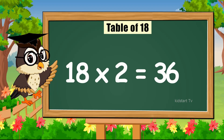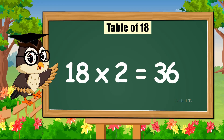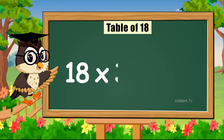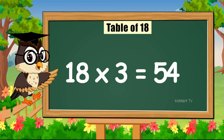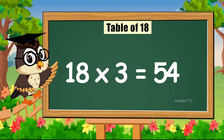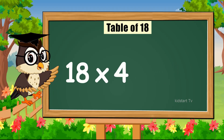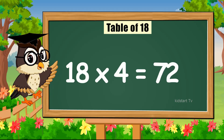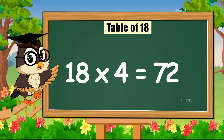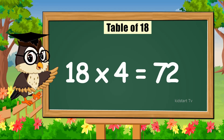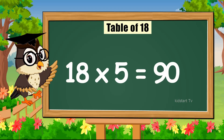18 times 2 is 36. 18 times 3 is 54. 18 times 4 is 72. 18 times 5 is 90.